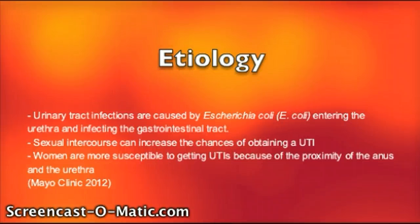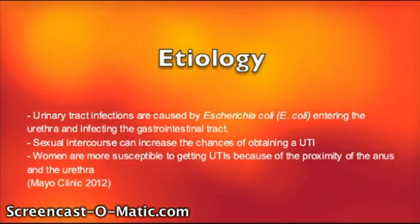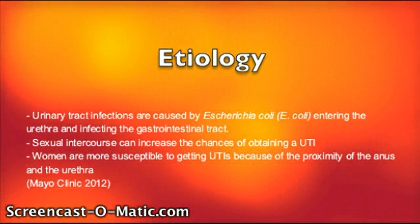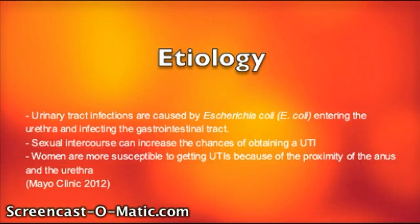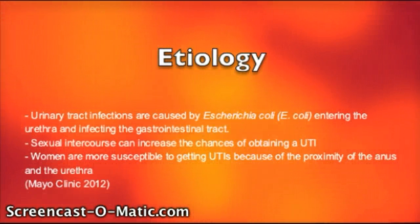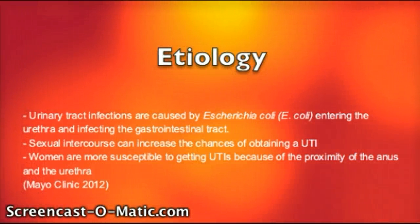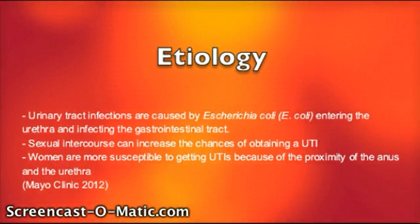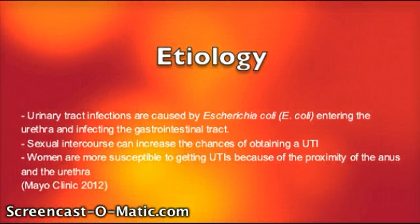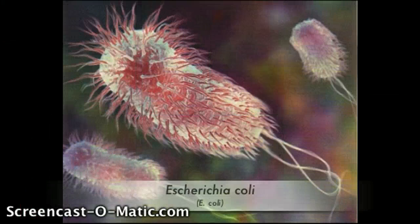Etiology! Urinary tract infections are caused by Escherichia coli entering the urethra and infecting the gastrointestinal tract. Sexual intercourse can increase the chances of obtaining a UTI. Women are more susceptible to getting UTIs because of the proximity of the anus and the urethra. Here is a picture of the microorganism E. coli.